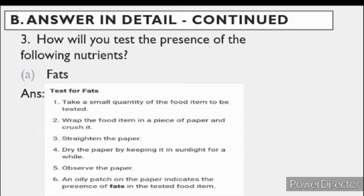How will you test the presence of the following nutrients? Number A is fats. First we have to see what are fats. We all know that there are various components of food. Various components of food includes carbohydrates, proteins, fats, vitamins, minerals, fiber and water. Fats are called energy giving foods. They give much more energy than carbohydrates. Fats gives us instant energy.